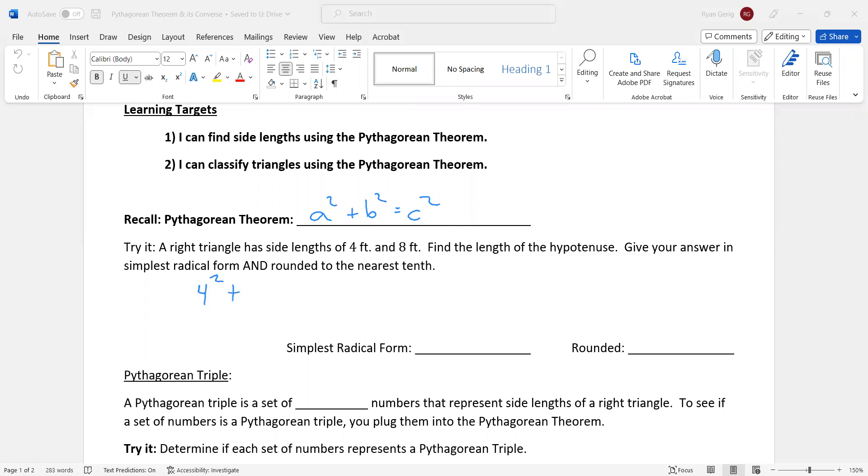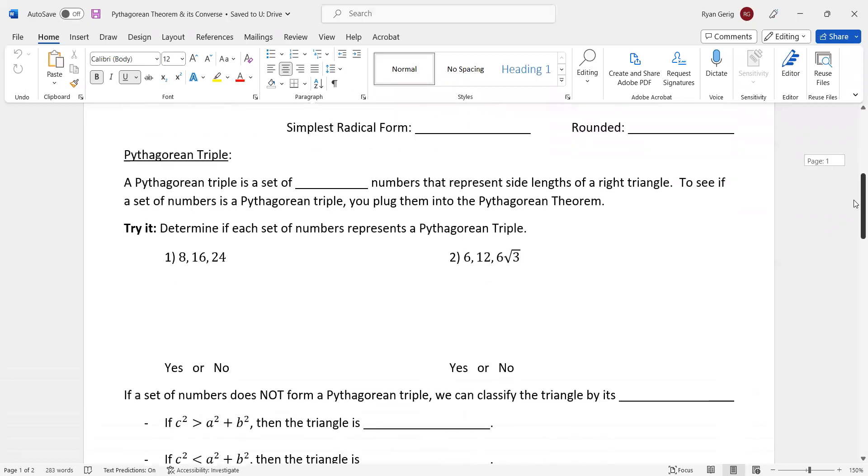So 4 squared plus 8 squared equals C squared. This is a very common problem that you've probably done several times. Remember at the end, you want to get the hypotenuse, you've got to take the square root. So the square root of 80, I'm just going to save us some time. We've done a lot of radical stuff already. Simplest radical form is going to be 4 radical 5. Rounded, I'm going to type that in the calculator. It's going to be really close to 9, 8.9. And that is what the Pythagorean theorem does. Not what this lesson is really looking at. We're going to do that a lot, but not the focus here.